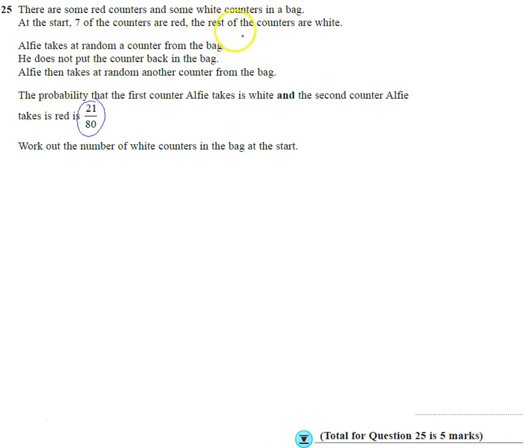We're going to have to create some kind of algebra equation. So the first thing to think about is we know there's seven red counters in the bag at the start. We don't know how many white, that's what we want to find.